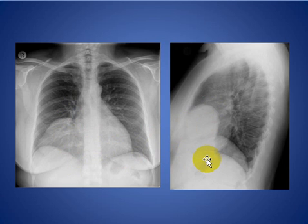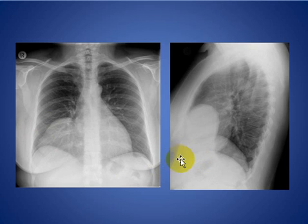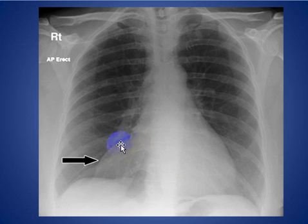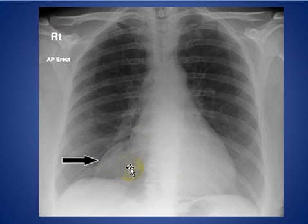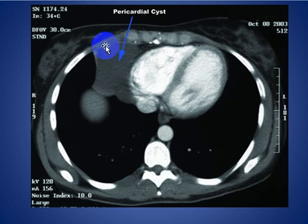Here is another right cardiophrenic mass silhouetting the right cardiac border, indicating an anteriorly located anterior mediastinal mass. And here is the CT scan of the patient showing a pericardial cyst.